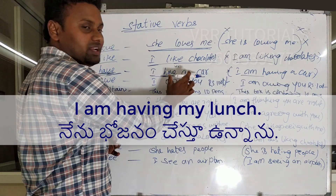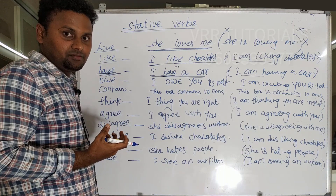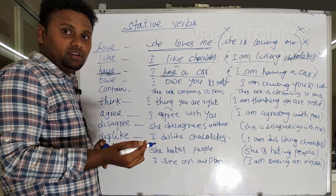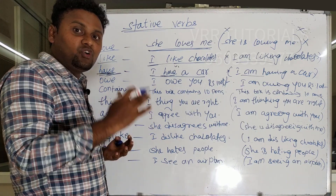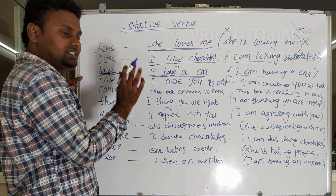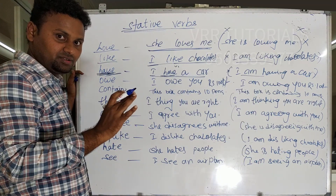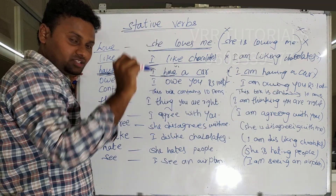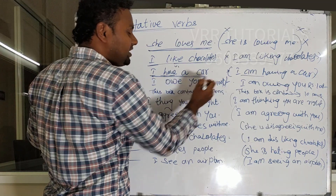So to summarize 'have': when expressing possession, say 'I have a car' — not 'I am having a car.' That is incorrect. Similarly, 'own' is also stative. I own a car is correct. I am owning a car is wrong. So 'I am having a car' is incorrect; instead we say 'I have a car.'